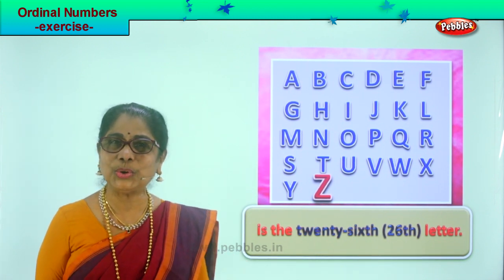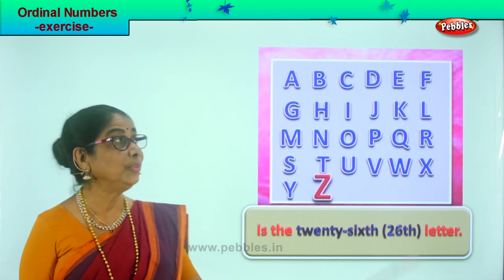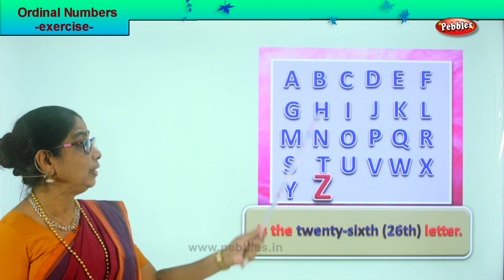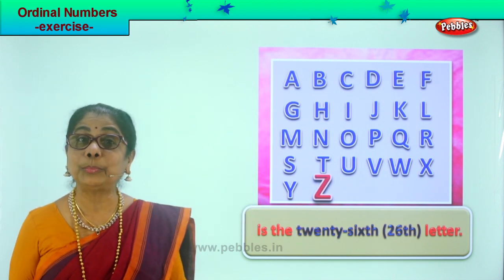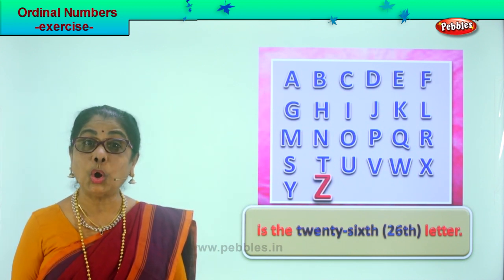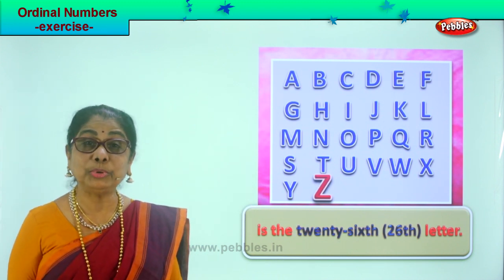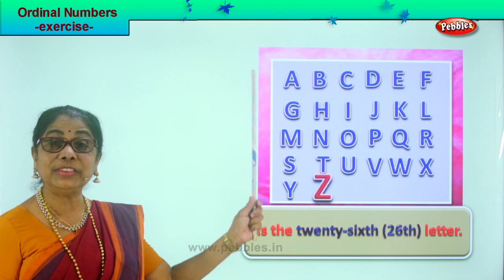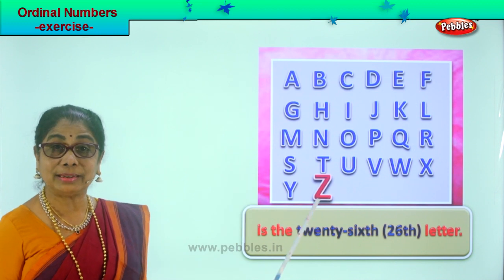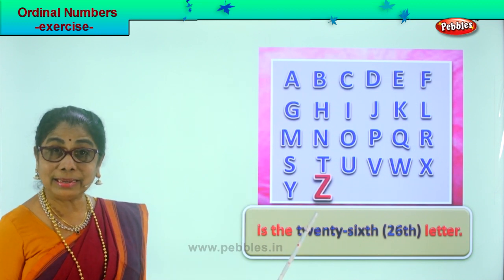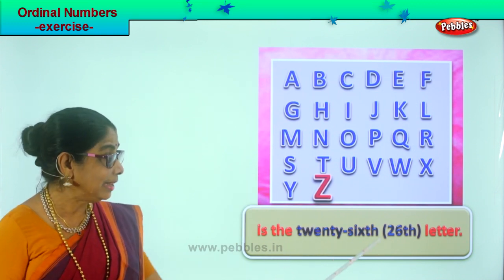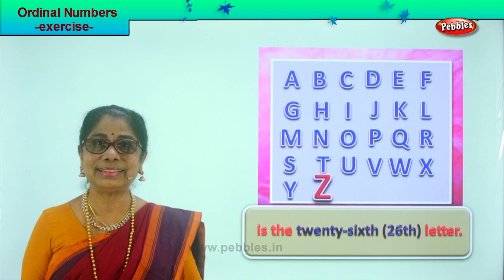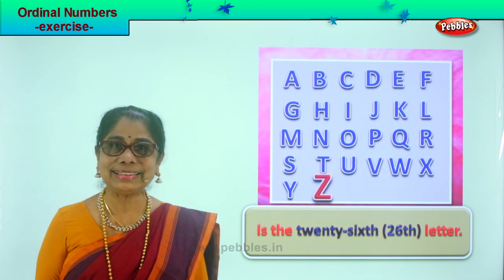Did you enjoy? Now you know A to Z — the position, the ordinal position of each letter. Z is the twenty-sixth letter.